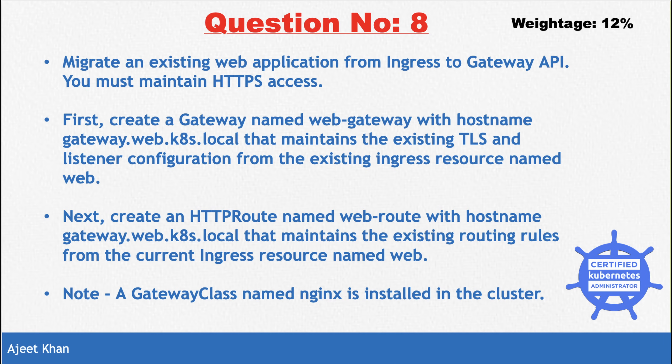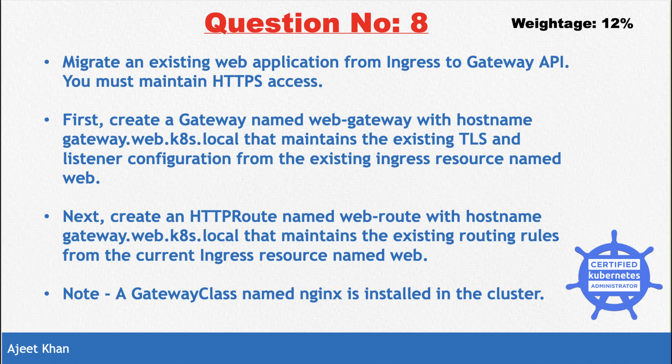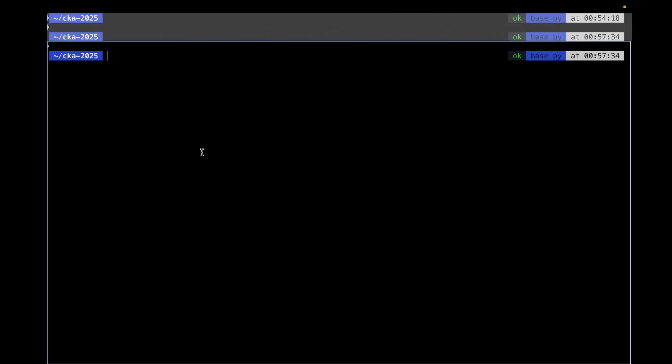There is a note: a GatewayClass named 'nginx' is already installed in the cluster. I'm using the kind tool to create a local cluster, so I need to create this scenario manually. In the exam, you'll get all these things — existing ingress, gateway class, TLS secret — already available, and you just need to start solving the question.